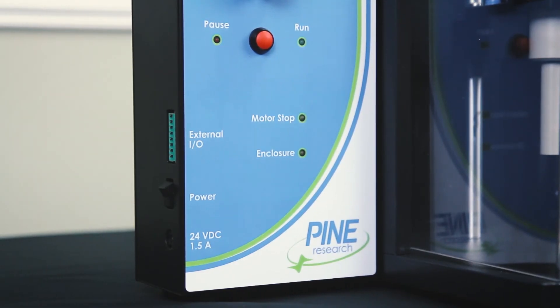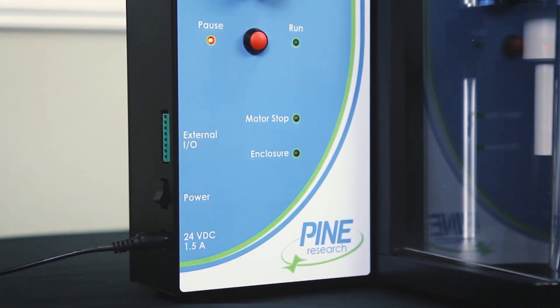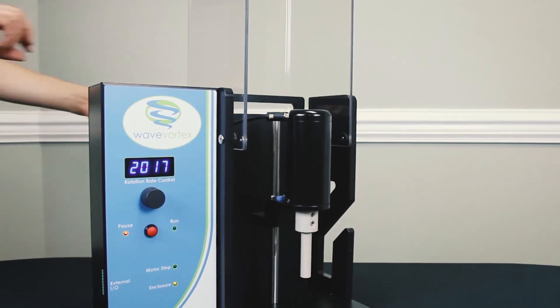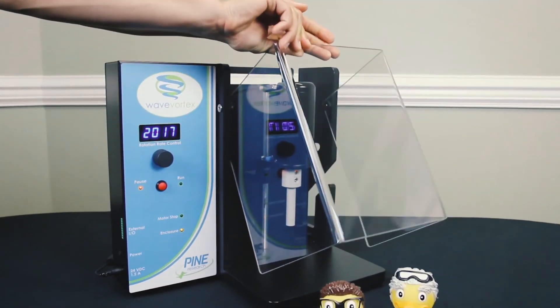Plug the wave vortex back in and turn it on. Awesome. At this point, you have successfully replaced the shaft on the wave vortex rotator.